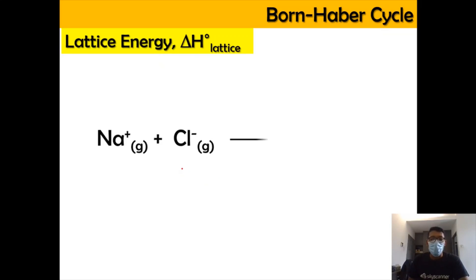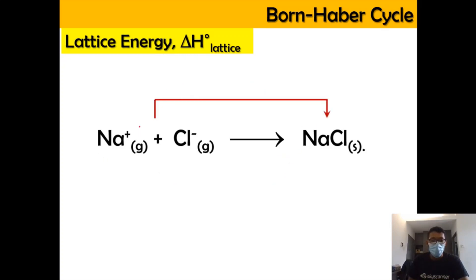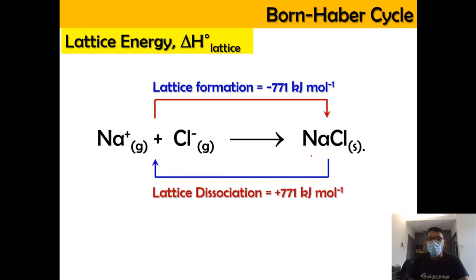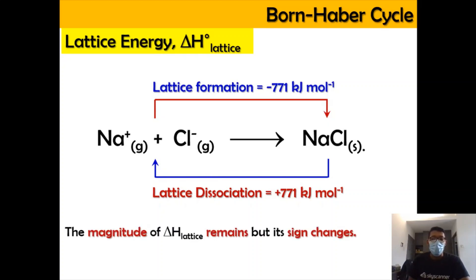Lattice energy can be represented simply: from gaseous ions forming solid, energy is released — lattice formation energy of negative 771 kilojoule per mole. From solid going into gas, lattice dissociation energy is absorbed to break down the solid into gaseous ions. The magnitude of lattice energy remains the same; only the sign changes from negative to positive — lattice of formation versus lattice of dissociation.